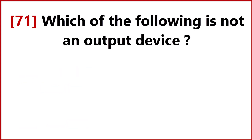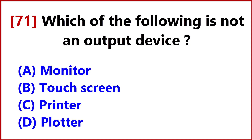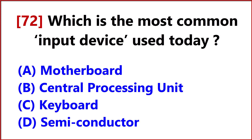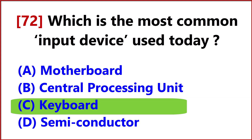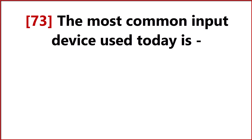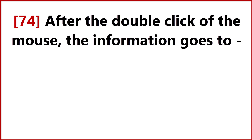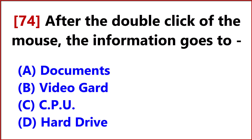Which of the following is not an output device? Answer, Option B, Touchscreen. Which is the most common input device used today? Answer, Option C, Keyboard. The most common input device used today is Answer, Option C, Mouse. After the double click of the mouse, the information goes to Answer, Option C, CPU.